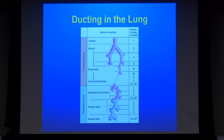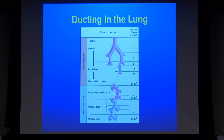We need that enormous surface area because it's across the epithelium of the alveolar sac where all oxygen comes out of the air and goes into the blood, and where all carbon dioxide leaves the blood and goes into the air. Gas exchange likely occurs all the way down in the respiratory bronchioles — where we have about 500,000 — but the emphasis is on the terminal alveolar sacs where much of the exchange occurs.